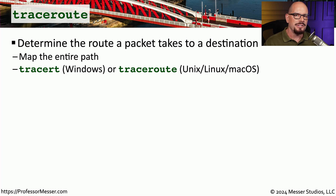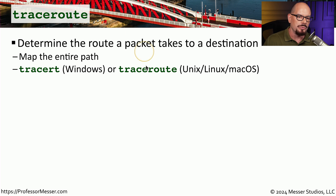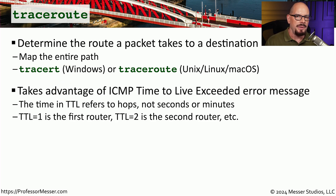A utility you'll find yourself using almost as much as ping is the traceroute command. As the name implies, it will trace a route and tell you what routers are between your device and the destination, mapping the entire path. In Linux and macOS, you run the full 'traceroute' command. In Windows, it's abbreviated as 'tracert'. This also uses ICMP, but a different aspect of ICMP than ping.